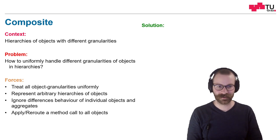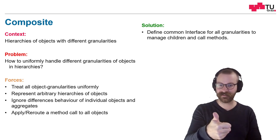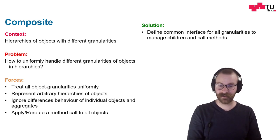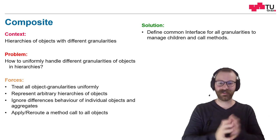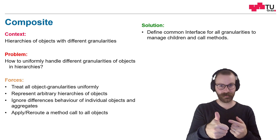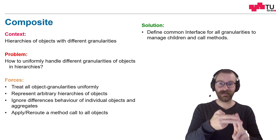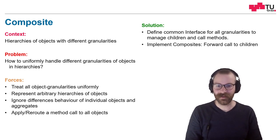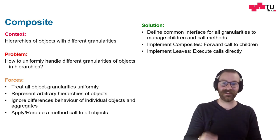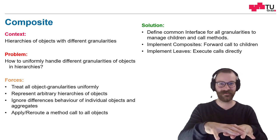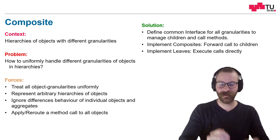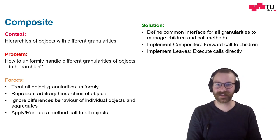The solution is to firstly define a common interface for all granularities to manage children and call methods — this is the composite interface. This interface supplies the original methods we want to call, as well as add and remove children. Then we have to implement the composite, which just forwards the call to the children. And then we implement the actual leaf children, where there is no rerouting to further children — the call is directly executed.